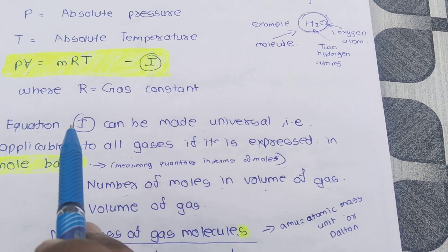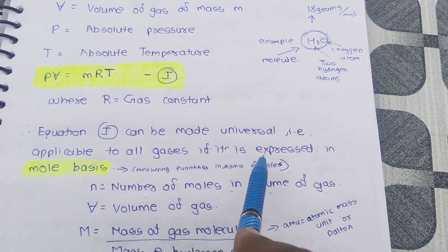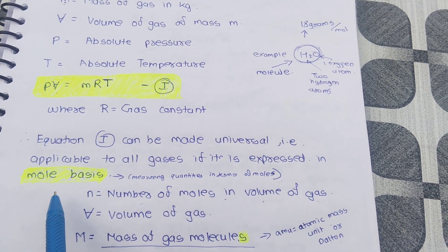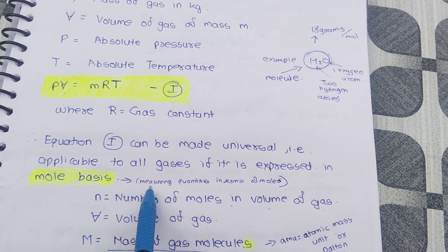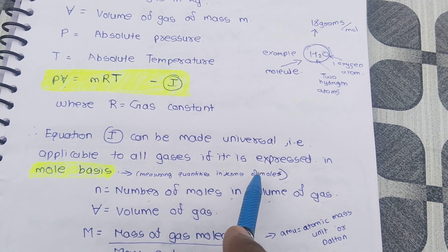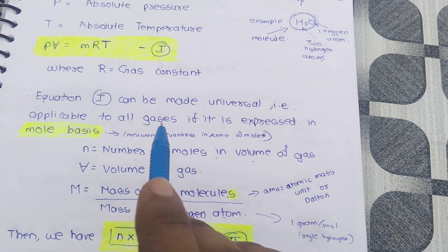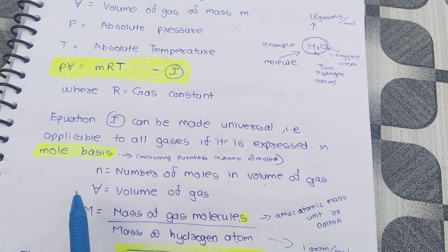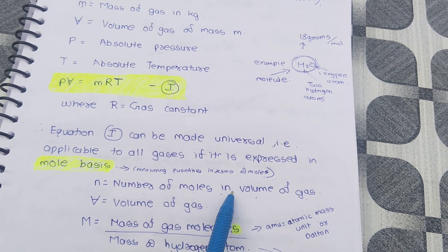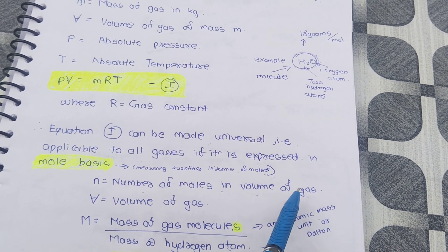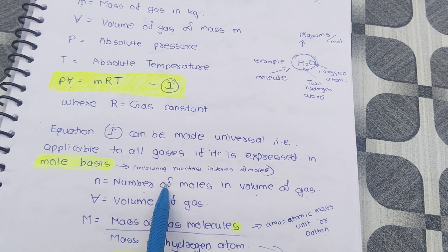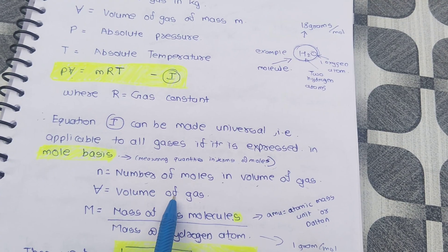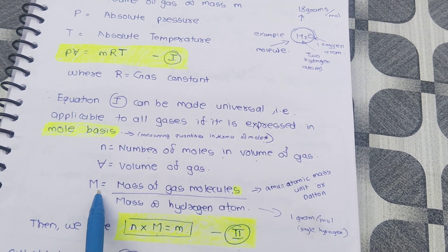Equation one can be made universal, i.e., applicable to all gases, if it is expressed on a mole basis. Measuring quantities in terms of moles means we measure each and every quantity of gas in moles. Here, n is equal to the number of moles in the volume of gas. We need to calculate how much volume of gas is there.